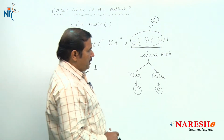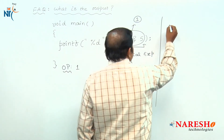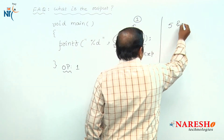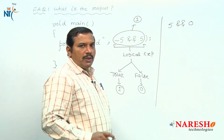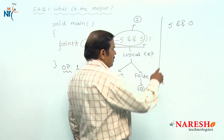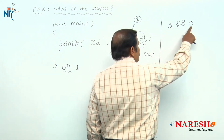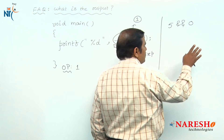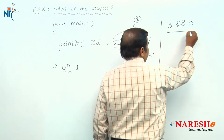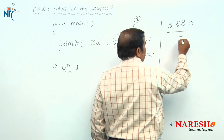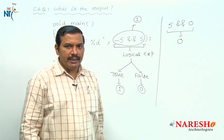As an example, in the case of logical AND, suppose the first operand is 5 and the second operand is 0. In this case, the first operand is considered as true and the second operand is considered as false. True AND false is false. Hence, the value of this logical expression is evaluated as 0.